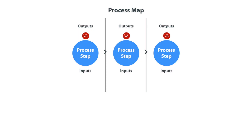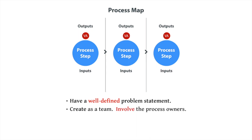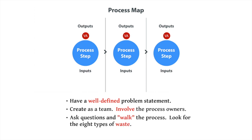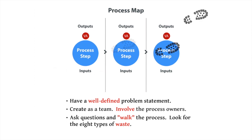Some guidelines to use when beginning a process map: have a well-defined problem statement in the charter, create it as a team and involve the process owners, ask questions and walk the process to really see the sequences of activities. In doing so, look for the eight types of waste.